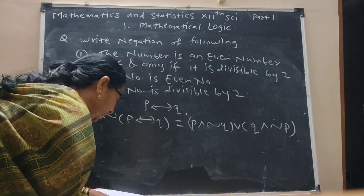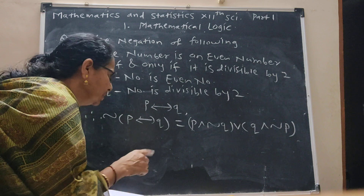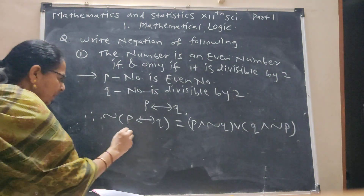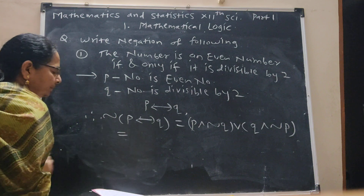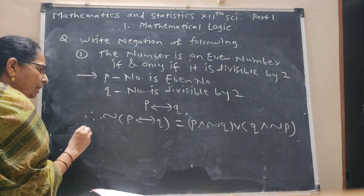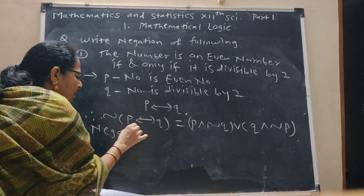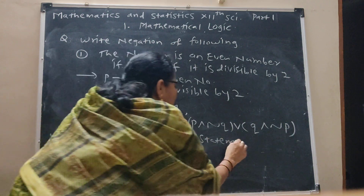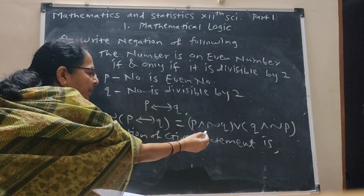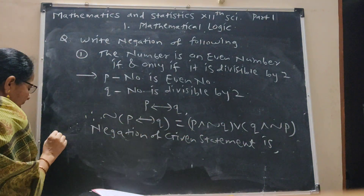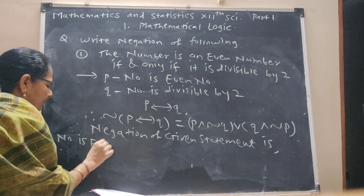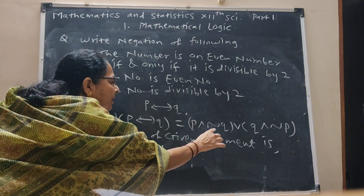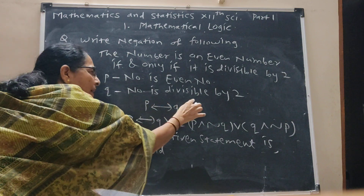This is the formula. Now, P ↔ Q becomes (P and ¬Q) or (Q and ¬P). Writing the meaning: P is 'the number is an even number', and negation Q is 'the number is not divisible by 2'.